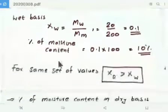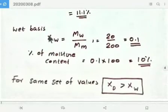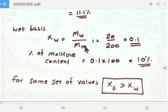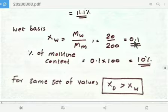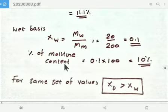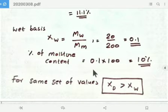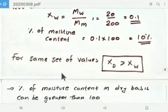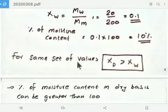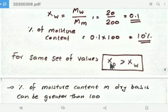On the wet basis, the equation Xw equals Mw divided by Mm gives 20 divided by 200, which equals 0.1. This is the fraction of moisture content on wet basis. The percentage of moisture content on wet basis is 0.1 times 100, which equals 10 percent.